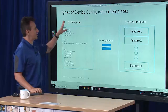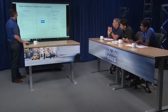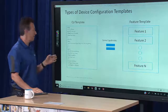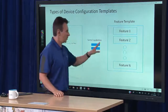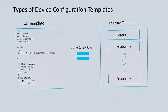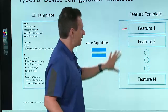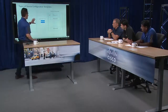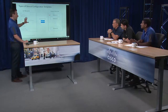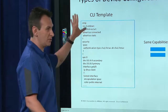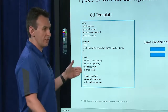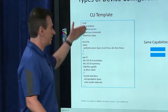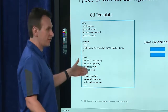We talked about device configuration templates — there are actually two ways of executing them. What we really focused on before is what we call a feature template. These are exactly the features we had before: system, transport, routing, security — all put together into the feature template, sort of like an onion. Side by side, we also have a CLI template. Certain administrators who have been around networking would recognize this — it's just a simple command line interface.